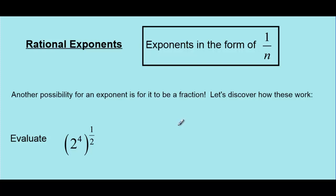In this lesson, we're going to continue our exploration of different types of exponents. For this one, we're going to look at rational exponents. Rational numbers, of course, are just another way of saying numbers that are fractions. For example, 1 over n happens to be a rational number.